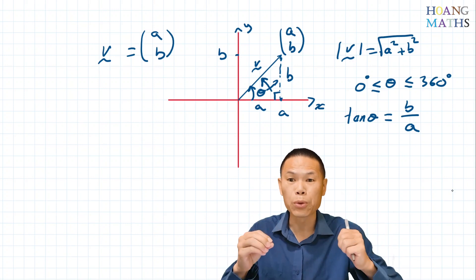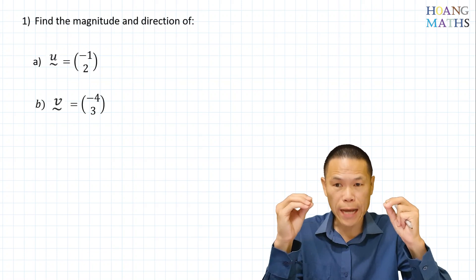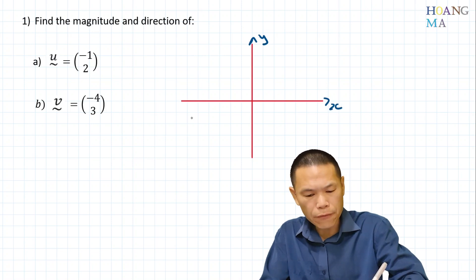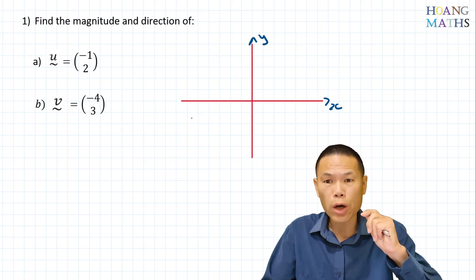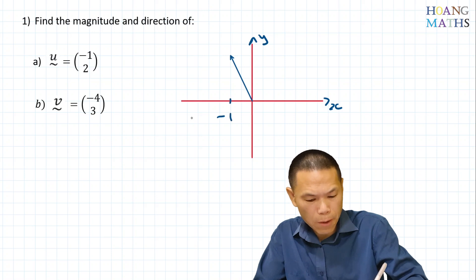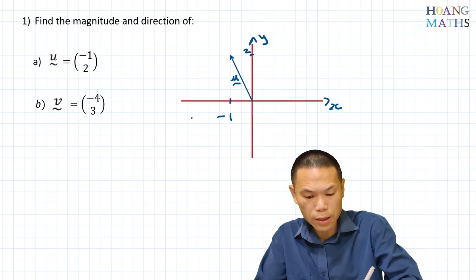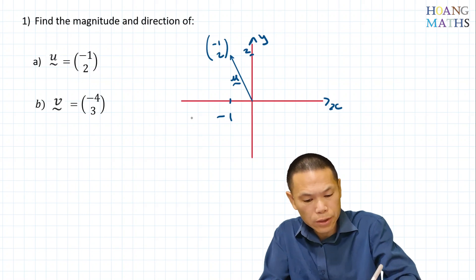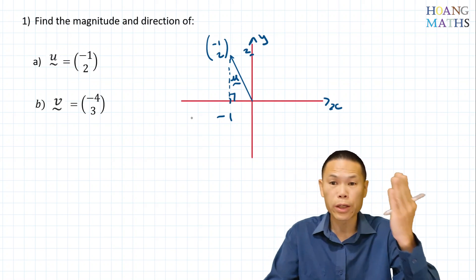So let's go through a couple of examples. First one: to find the magnitude of U, it's better if we just quickly draw a diagram first. So this is Y, this is X. The vector U is (-1, 2), so that means it's on the second quadrant. So this is negative 1, 2 — this is vector U, and this coordinate is (-1, 2).